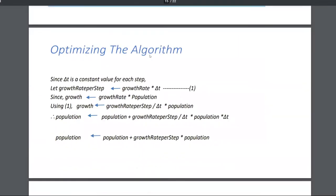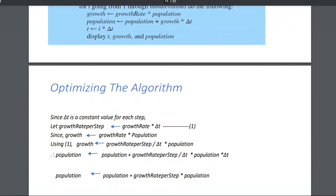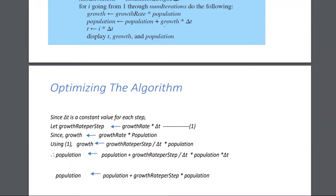So what I'm showing you is that the growth is nothing but the growth rate per step multiplied by the population. Replacing the growth in this equation with this expression — the growth is growth rate multiplied by population, and growth rate per step is this. My goal is to get rid of this growth variable. I calculate something called growth rate per step, which is the r value multiplied by delta t.